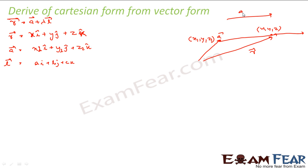And I have a line vector that I know, which is ai plus bj plus ck. This is also something I know. Now x1, y1, z1 are known values — maybe 5, 6, 7 or something. The normal convention is: if you say x1, y1, z1 or x2, y2, z2, that means you know those values. If you say x, y, z, those are variable. So I take any variable point (x, y, z) on this line.